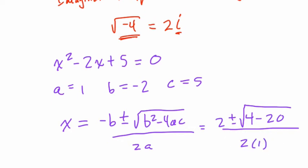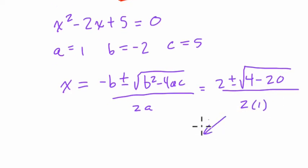You can actually see here what's happening. Here we have 2 plus or minus the square root of negative 16 all over 2.